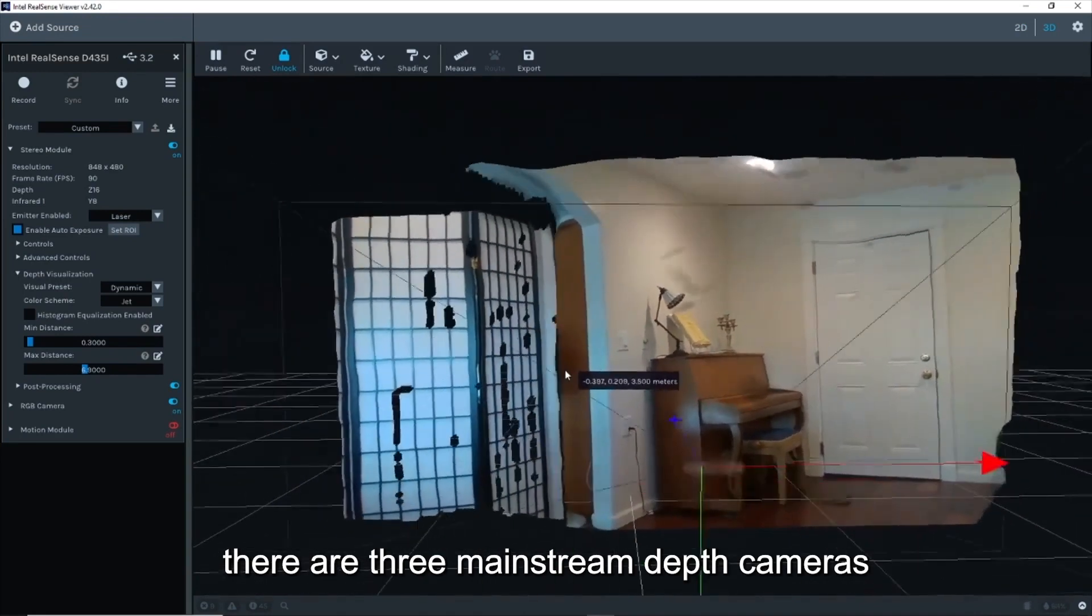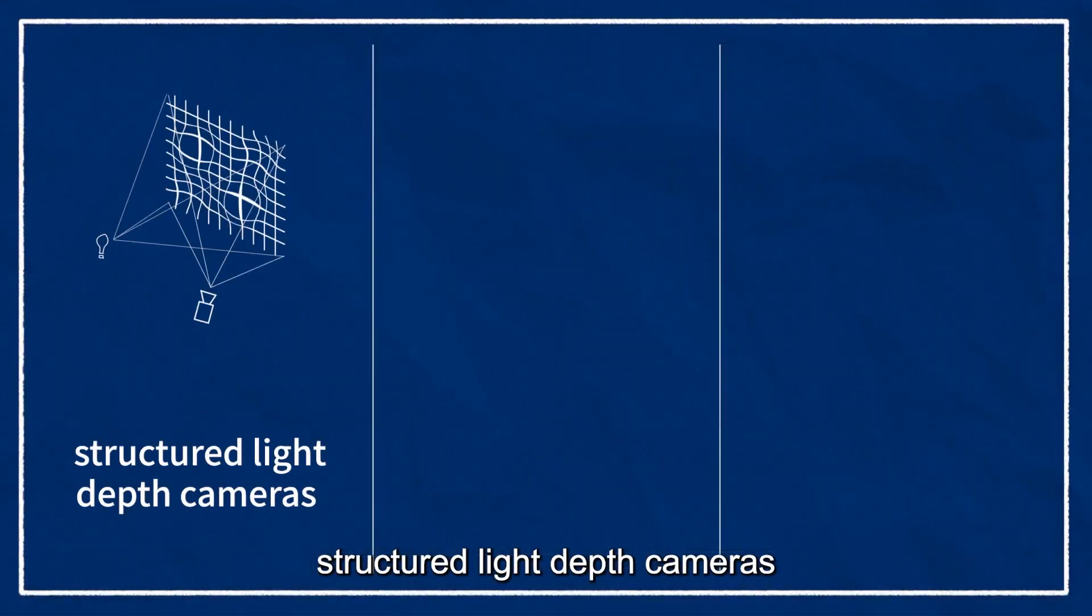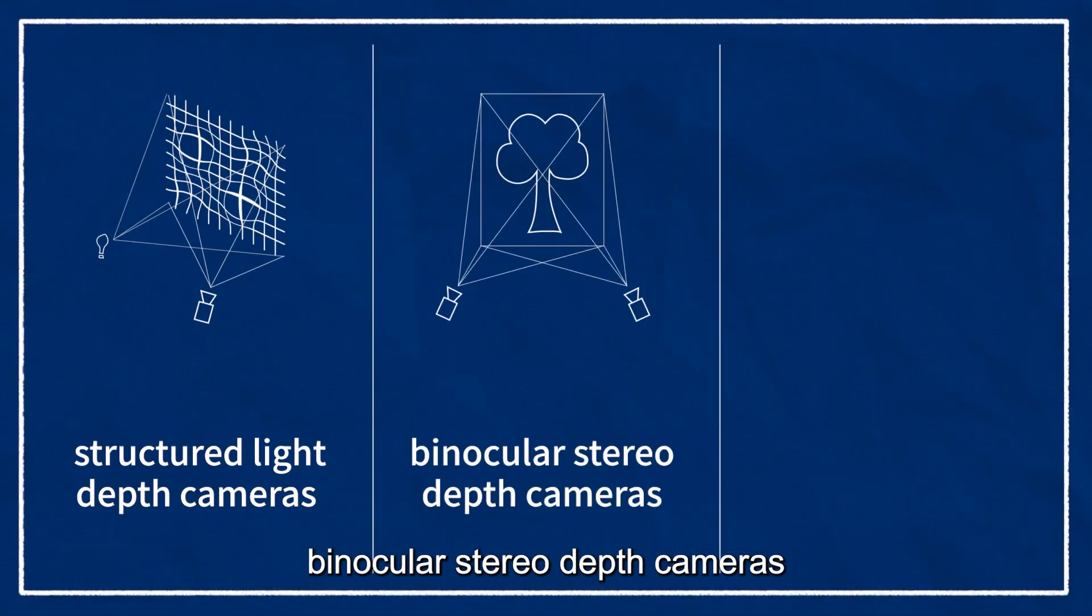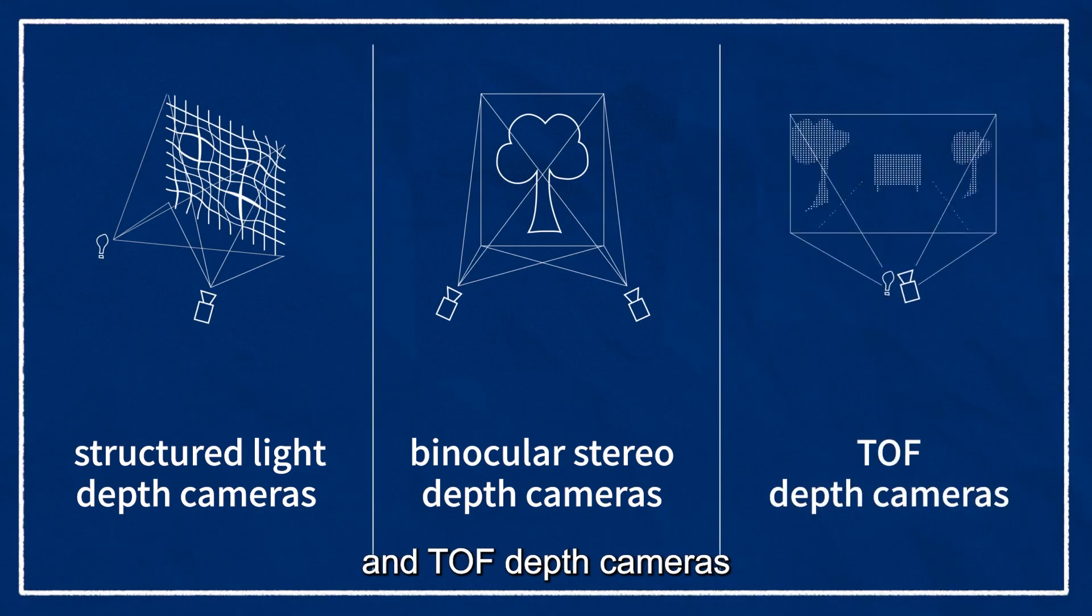Currently, there are three mainstream depth cameras: structured light depth cameras, binocular stereo depth cameras, and ToF depth cameras.